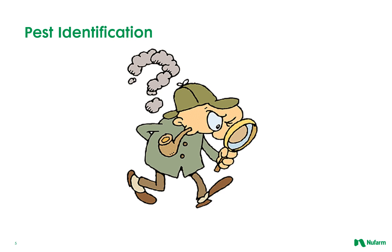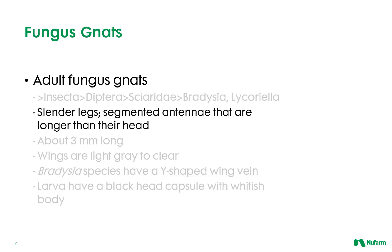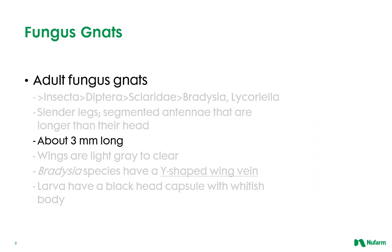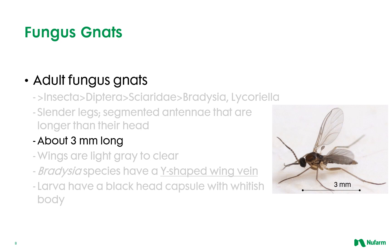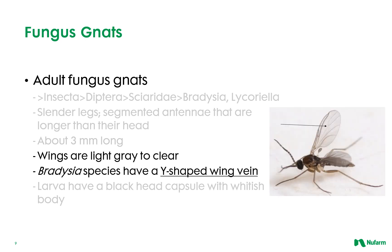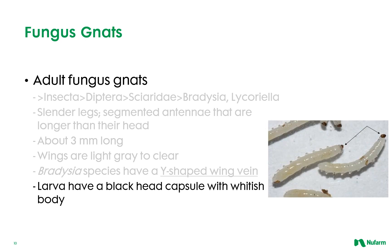Now let's discuss how to properly identify these pests. Fungus gnats belong to the insect family Sciaridae within the Diptera order, with planted antennae that are longer than their head. Fungus gnats are about three millimeters long. Their wings are light gray to clear, and the Bradysia species' wings have a Y-shaped vein. Fungus gnat larvae have a black head capsule with a slender, whitish body.